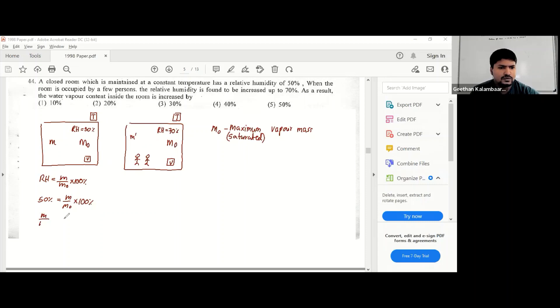M over M₀ is half. M dash over M₀ is 7 by 10.